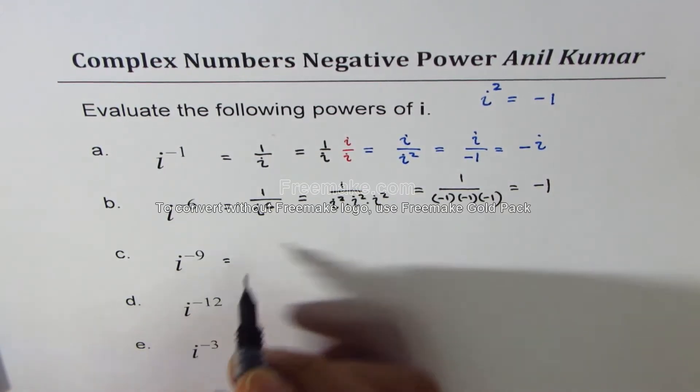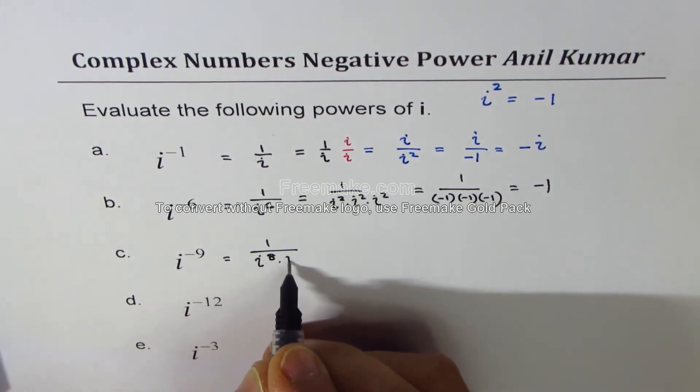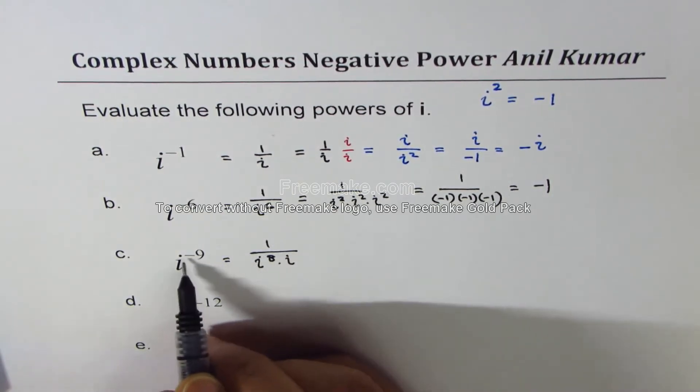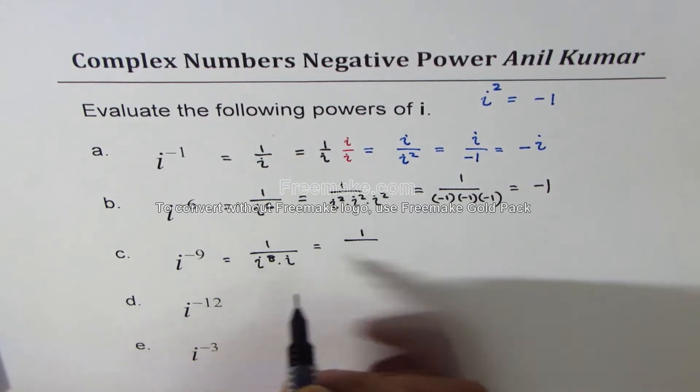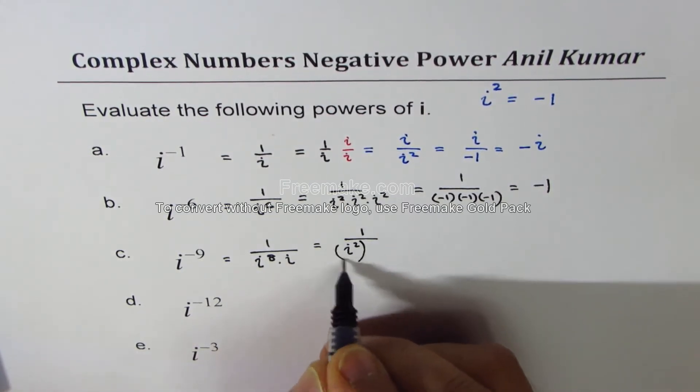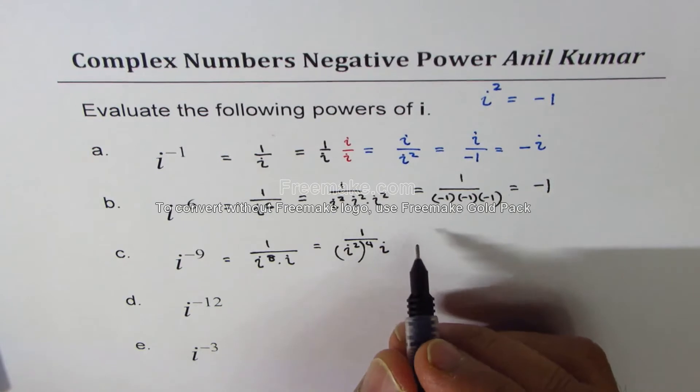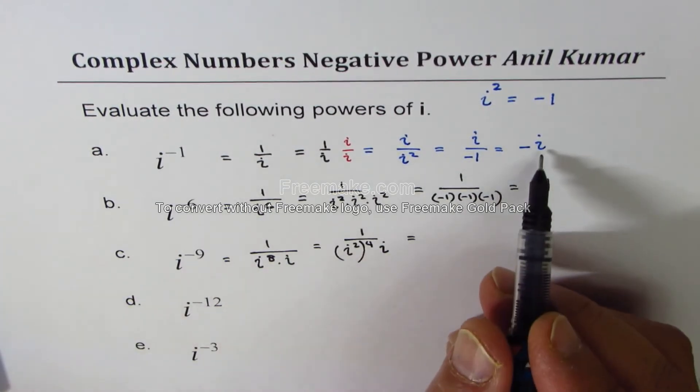Let's do the next one, which is i to the power of minus 9. So this time, I'll write this as a combination of i to the power of 8 times i, so that gives me 9 in the denominator. Now i to the power of 8 can be written as i square to the power of 4, so 4 times 2 is 8, and we have i here. So what I will do is, I will replace 1 over i with minus i.